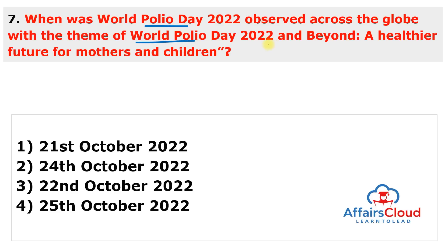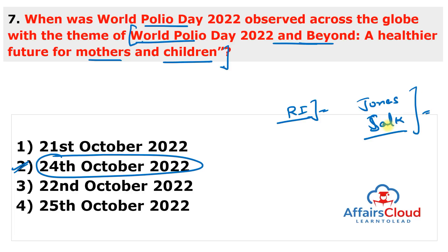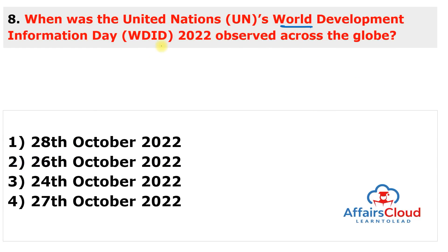Next question: when was World Polio Day 2022 observed, and what was its theme? World Polio Day 2022 was observed on 24th October with the theme 'World Polio Day 2022 and Beyond: A Healthier Future for Mothers and Children.' World Polio Day was established by Rotary International to commemorate the birth anniversary of Jonas Salk, an American virologist who developed the first successful polio vaccine. He led the first team to develop a vaccination against polio and begin its testing in 1953.